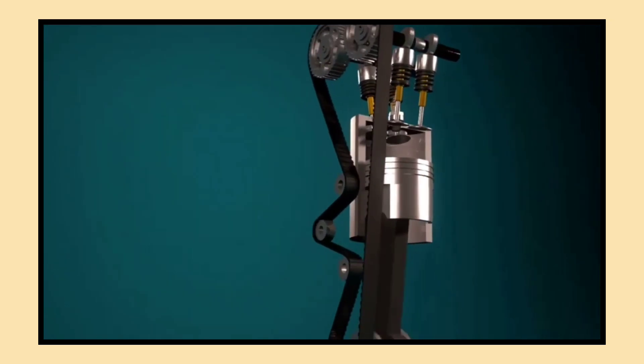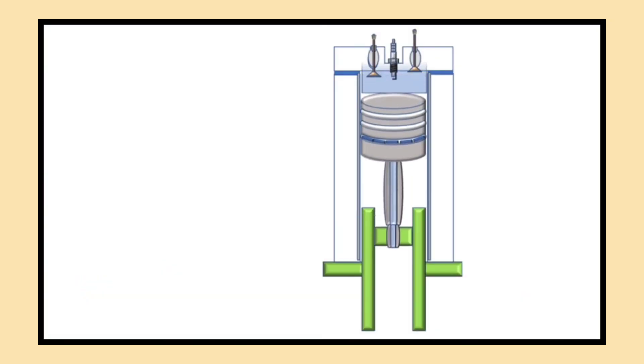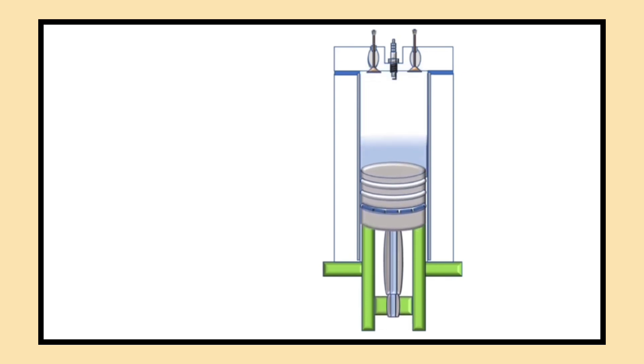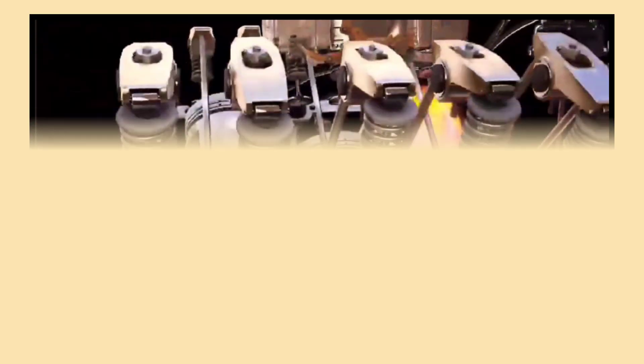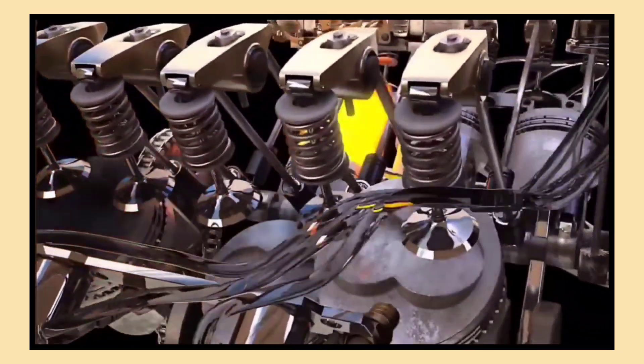For example, if the engine is running too hot, the ECU can adjust the fuel mixture or ignition timing to cool things down. This feedback loop happens incredibly fast, ensuring optimal performance at all times.